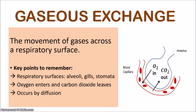Most of the time we focus on gaseous exchange in humans. As you can see here in the diagram, I have the alveolus, which is closely situated to the blood capillary. You can see how oxygen gas needs to leave the alveolus and enter the blood, while carbon dioxide from the blood leaves the capillary and enters the alveolus — an exchange of gases at the respiratory surface, hence why it is known as gaseous exchange.